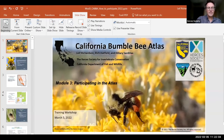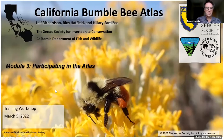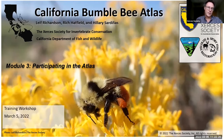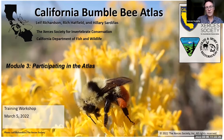Third module is everything you always wanted to know about how to participate in the California Bumblebee Atlas. It's about 50 slides, and I'm going to try to move quickly to catch us up a bit, but this is the how-to — the methods for the project. All of these methods are also described on our website, cabumblebeeatlas.org, as well as in the participant handbook or manual, which you can download from the website. So don't worry if you missed something in these slides — you can find it again on the website or in the manual.